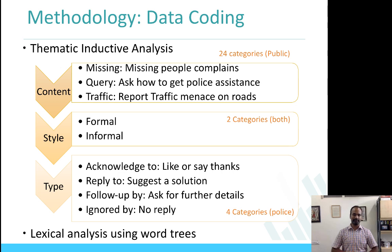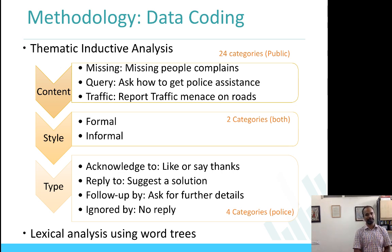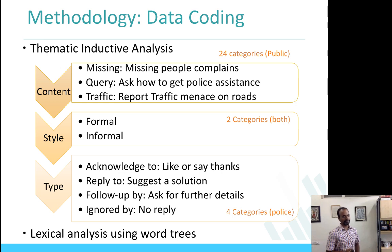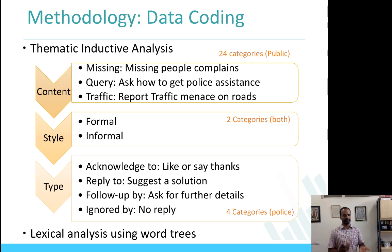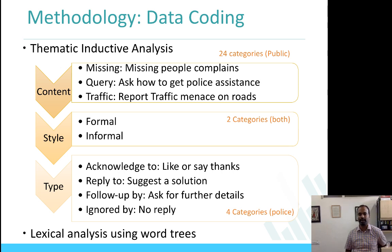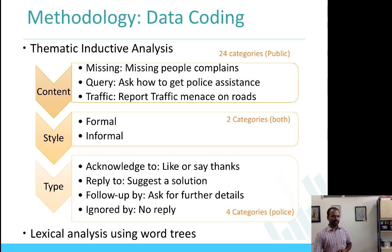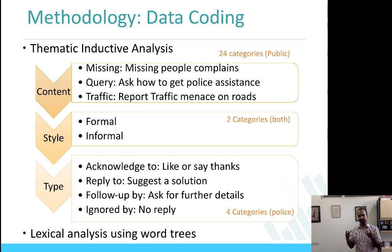There are multiple ways to look at this data. Looking at the posts and comments, we could analyze in different ways. One approach was finding out what people are talking about — misinformation, query, traffic details — that is about the content. Then we looked at the style of writing, which is formal or informal. And in terms of types of posts showing up: acknowledged to like or say thanks, reply to suggest a solution, follow up to ask for details, or ignore by not replying. These come from the police side. If you look at the right-hand side, there are 24 categories for public posts, 2 categories for style, and 4 categories for police responses.